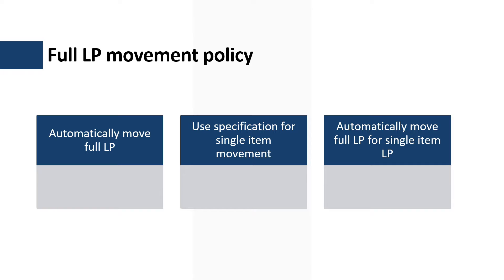The third option is called Automatically Move Full License Plate for a Single Item License Plate. In this flow, if the license plate contains a single item, the warehouse worker is not prompted to scan the item details before moving the pallet. But when it comes to a mixed license plate, the warehouse worker is prompted to scan each item inside the pallet.